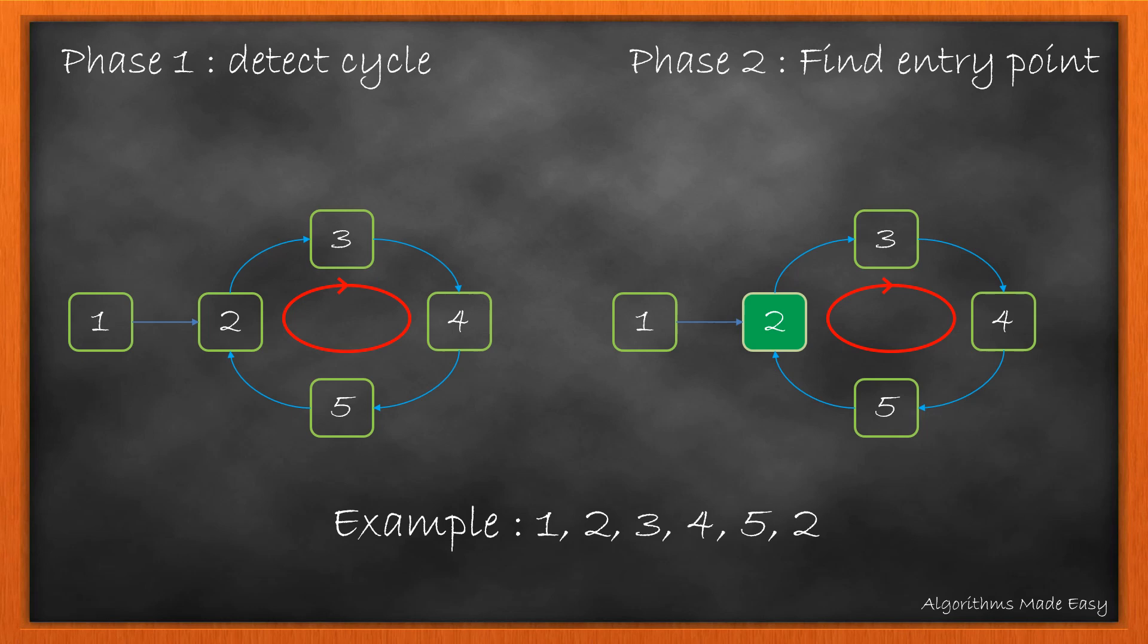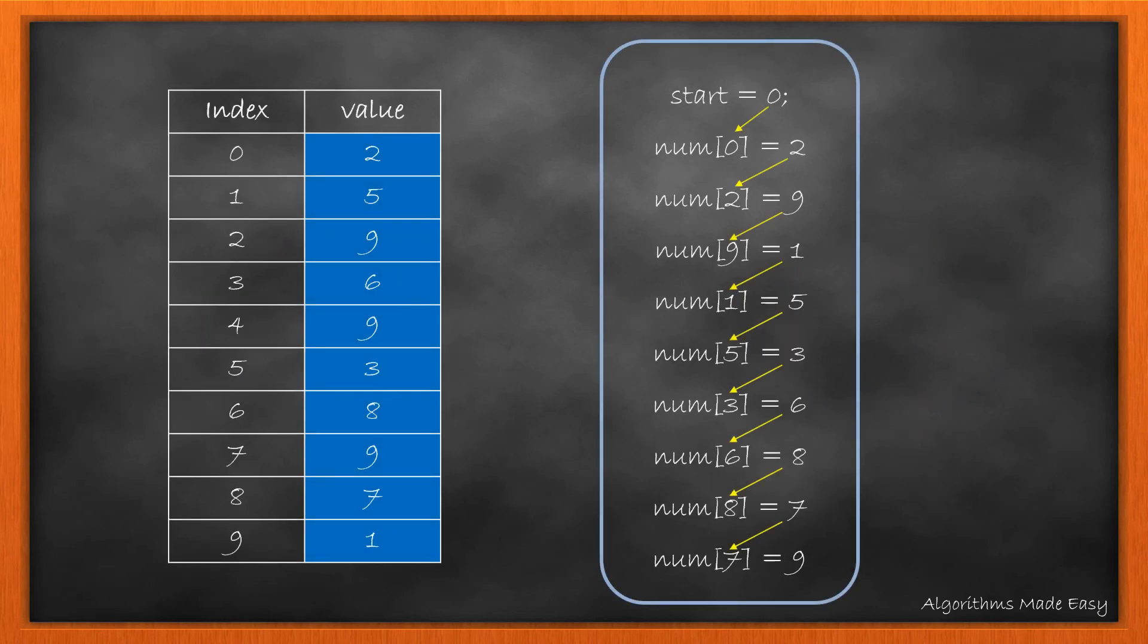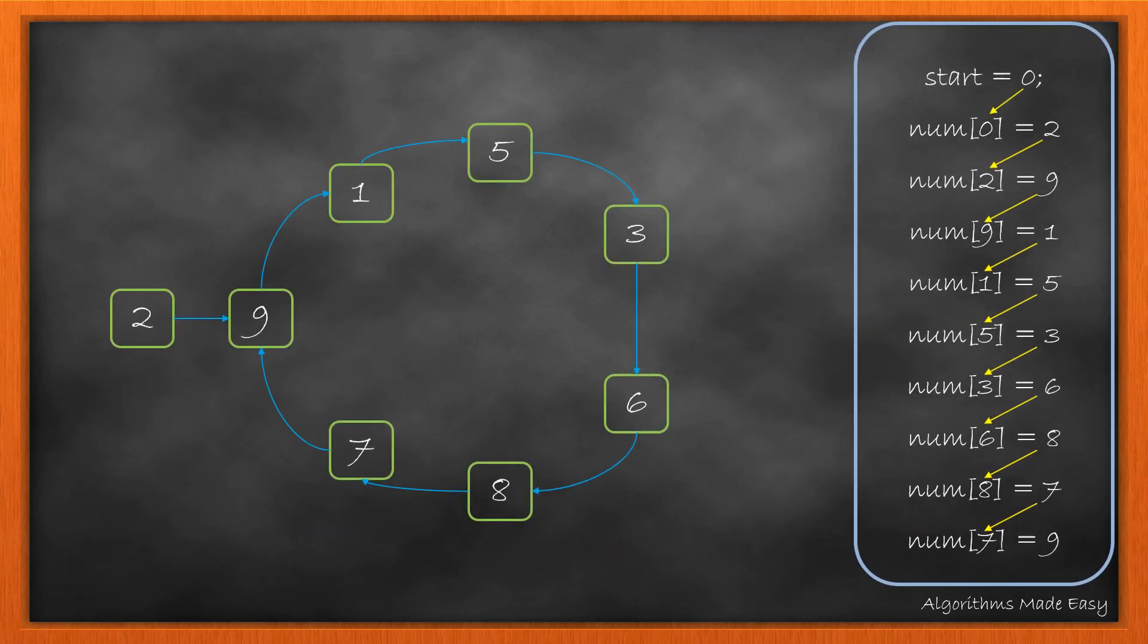Let's see how we will use it for our problem. Let's take this example to better understand the working. To visualize it as the linked list we saw earlier, we will start with 0. As the element at 0 is 2, our linked list will start from 2. The next element will be the element at num of 2, which is 9. The element after 9 will be the element at num of 9, that is 1 and so on. The final diagrammatic representation of our input will look like this.